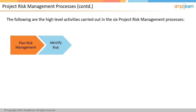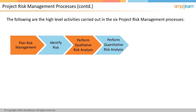The third process is perform qualitative risk analysis. This process is about prioritizing risks and ranking them as high, medium, and low for further action, with a focus on tools used to prioritize risks. The fourth process is perform quantitative risk analysis, in which you evaluate the combined effect of risks on the overall project outcome — the risks are quantified numerically. The fifth process is plan risk responses, which helps determine appropriate response strategies and actions for each individual risk and for overall project risk, integrating them into the overall project management plan.